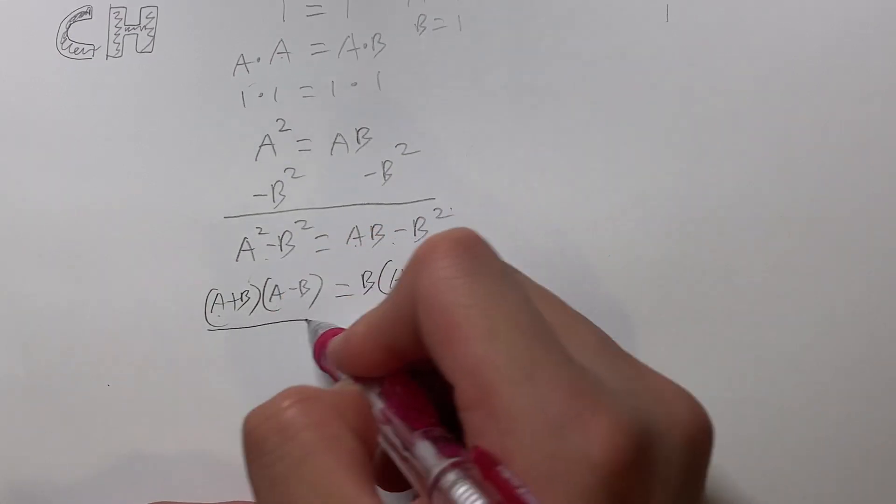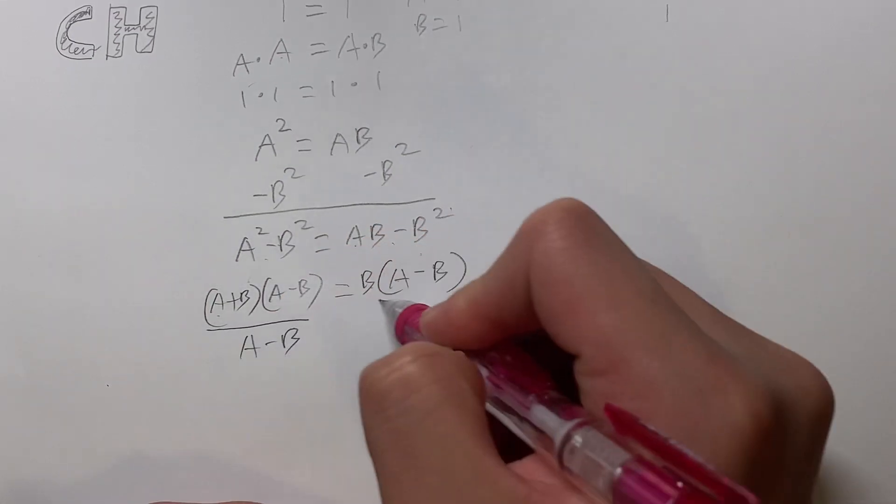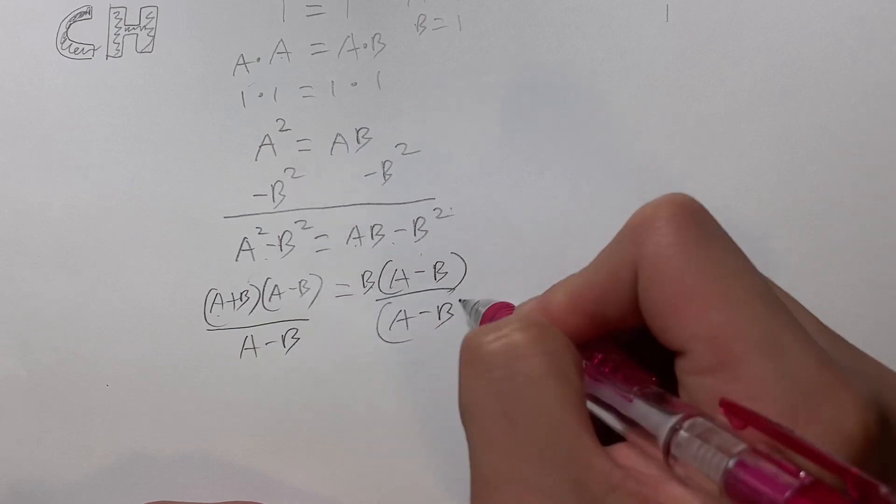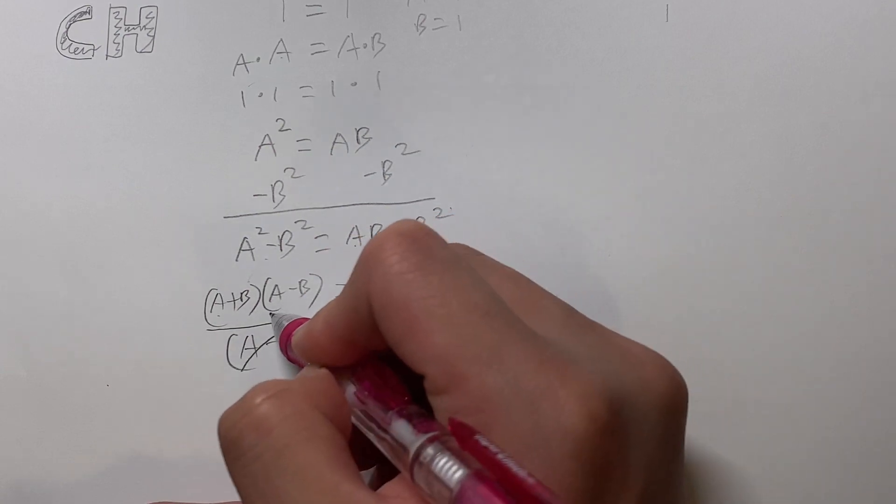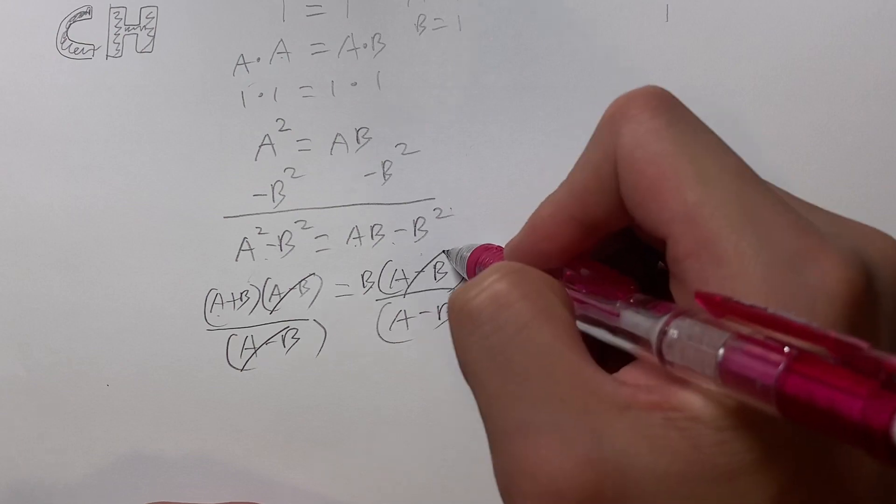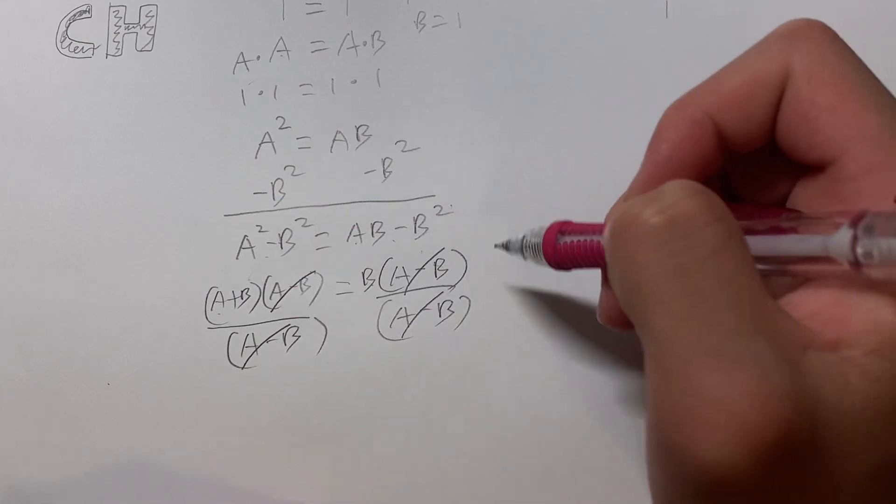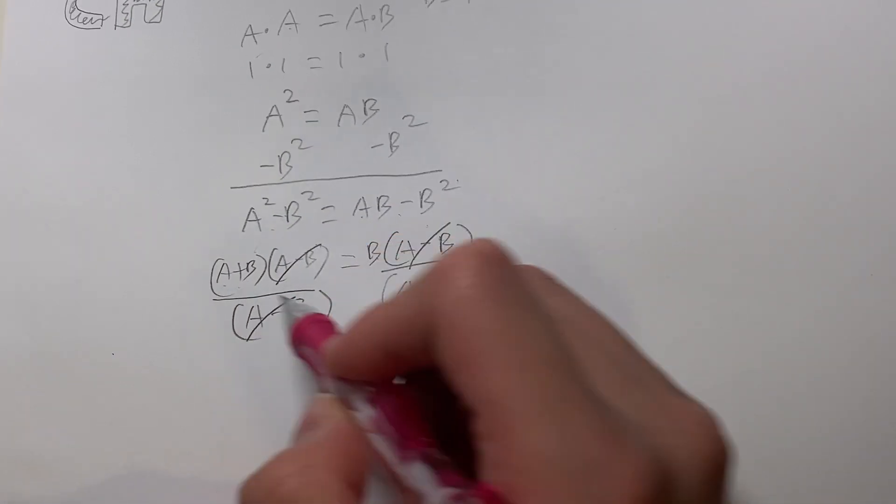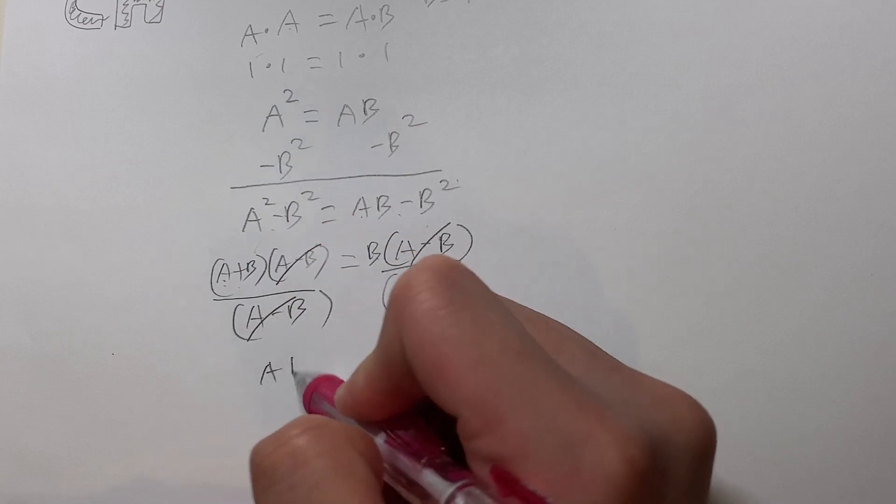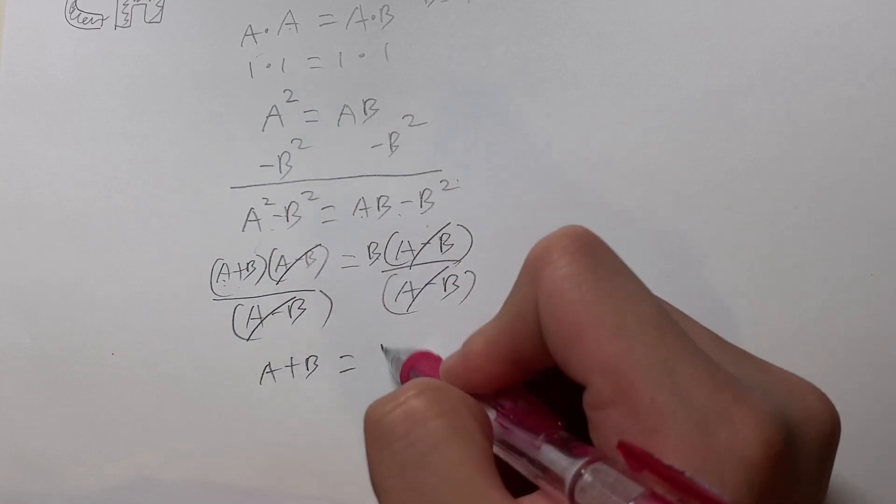Next, what I'm going to do is I'm going to divide both sides by A minus B. So when I do this, as you can see right here, this A minus B cancels out with this A minus B, and this A minus B cancels out with this A minus B. So when they cancel out, we're left on the left-hand side with just A plus B, and then on the right-hand side, we're left with just B.